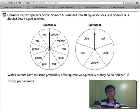And so the question: consider the two spinners below. Spinner A is divided into ten equal sections. Spinner B is divided into five equal sections. Which colors have the same probability of being spun on spinner A as they do on spinner B? Justify your answers.